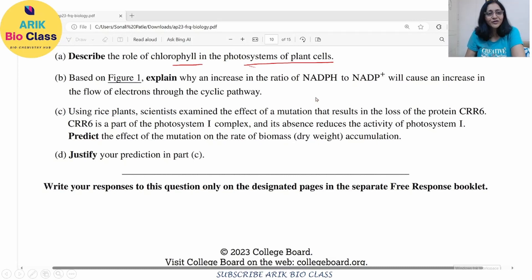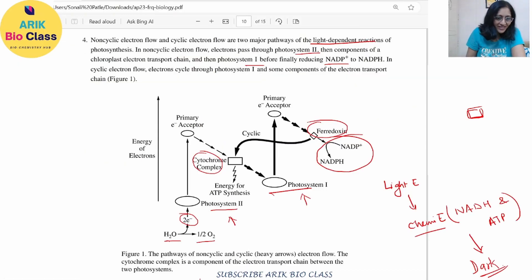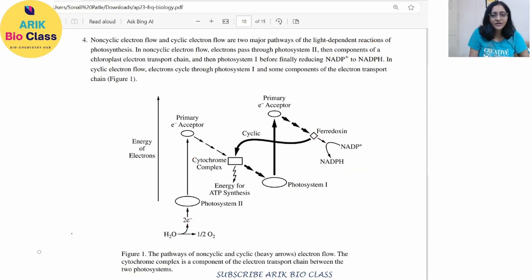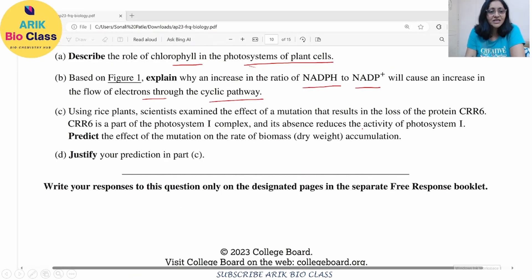Let's talk about the second part of the question. Based on figure 1, explain why an increase in the ratio of NADPH to NADP+ will cause an increase in the flow of electrons through the cyclic pathway. Let's go back to the cycle. So here as we understand what is happening when this NADP+ is getting converted into NADPH. So now the question says,